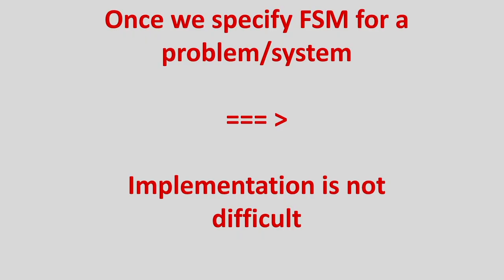Given an English-like statement, we can design almost any kind of sequential circuit using this method. The most important point is: once we specify the FSM for a problem or system from the English-like statements, most of the work is done. Implementation is not difficult. This is the most crucial part of sequential circuit design — we should focus on how to design a good FSM from the English-like statement.